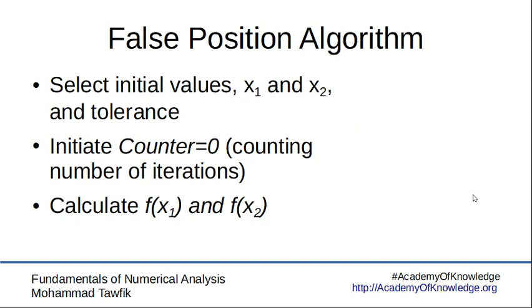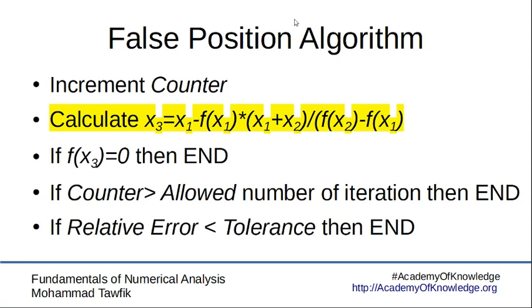The false position algorithm accordingly is exactly the same like the one we had for the bisection, initiating the values x1 and x2, initiating the counter and calculating f1 and f2. Then we go to the body of the algorithm where we increment, again the same step.